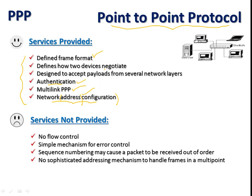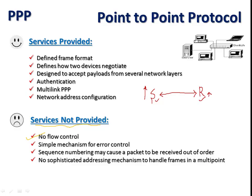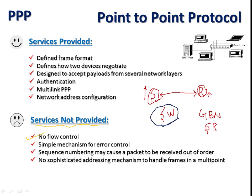There are services not provided in Point-to-Point Protocol. There is no flow control — when data is transferred between sender and receiver, the sender does not consider the capability of the receiver. If the receiver's capacity is less than the sender's and the sender sends data at high speed, the receiver will not be able to handle all data. Flow control protocols like stop-and-wait and sliding window with pipelining are not used here.